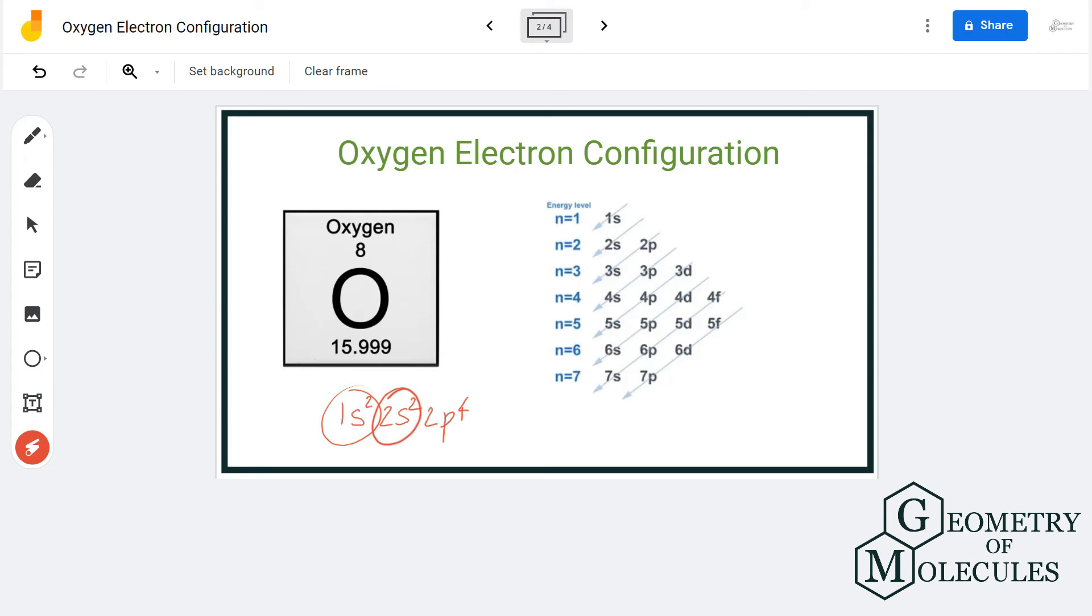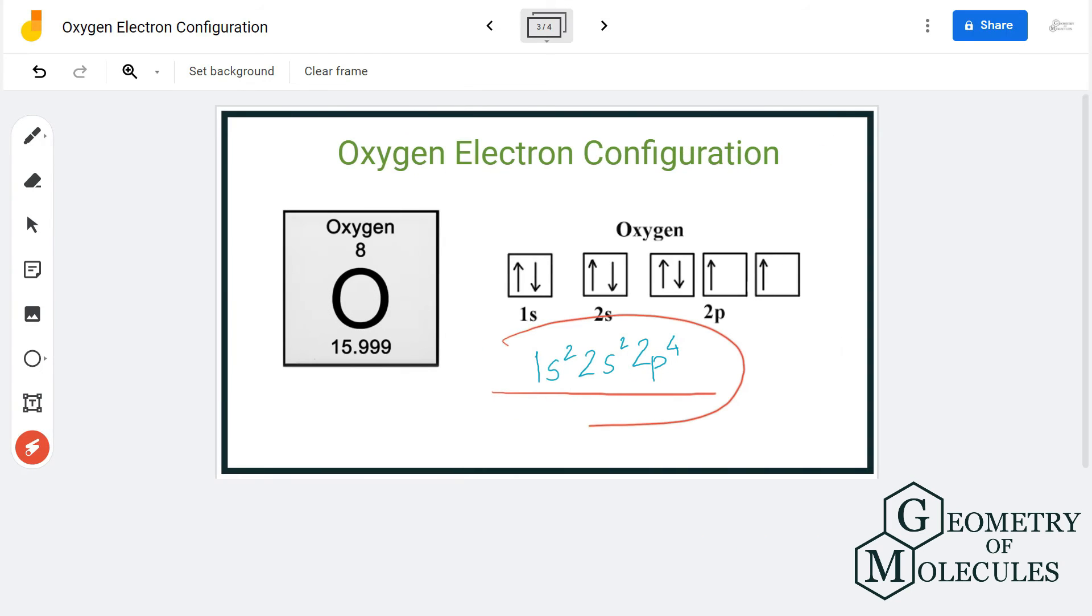So the electron configuration for oxygen atom is 1s² 2s² 2p⁴.